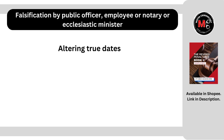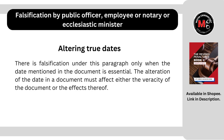Fifth Act of Falsification: altering true dates. There is falsification under this paragraph only when the date mentioned in the document is essential. The alteration of the date in a document must affect either the veracity of the document or the effects thereof. Example, si Police Officer Pedro nahuli sa akto niya si Juan na sinaksak si Jose at si Jose ay namatay. Dinala ni Pedro sa kulungan si Juan. Dahil valid warrantless arrest under Article 125 ng Revised Penal Code, may 36 hours si Pedro upang magsampa ng kaso. Sa report ni Pedro, nilagay niya na nahuli niya si Juan ng March 1. March 3 na, pero hindi pa rin nag-file ng case si Pedro. Ang ginawa ni Pedro, pinalitan niya yung report niya na March 1 ng March 2 para hindi siya liable under Article 125. Makakasuhan si Pedro ng falsification at violation ng Article 125, kasi yung date dito ay essential.